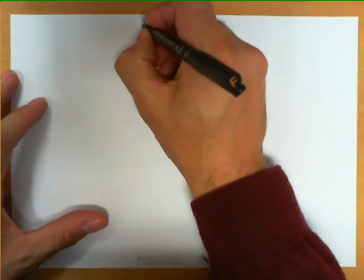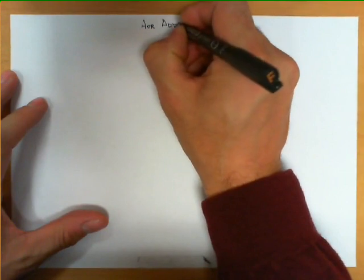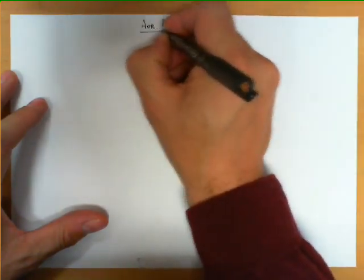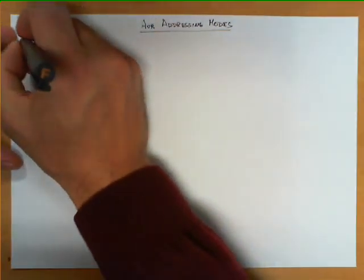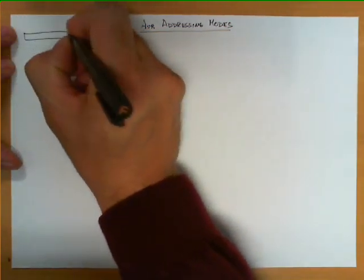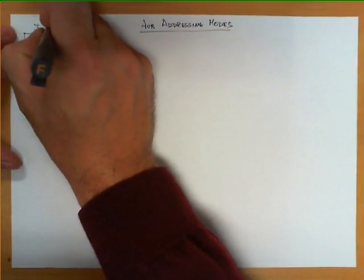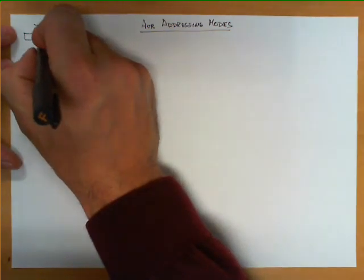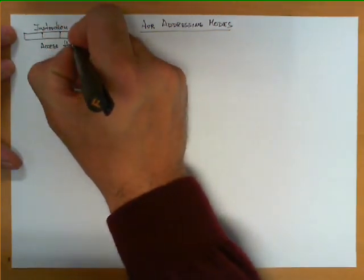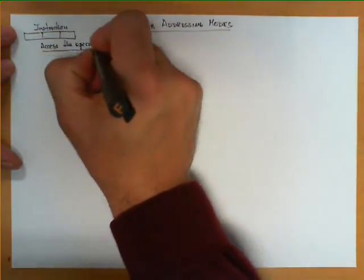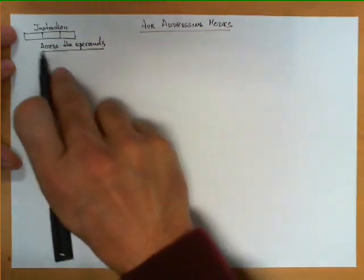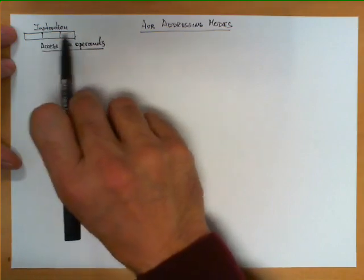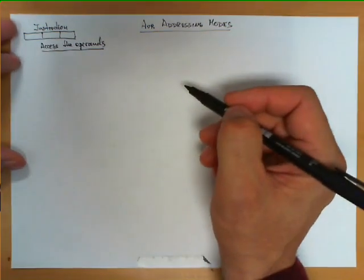In this video we're going to discuss three of the AVR addressing modes, the simplest ones. An addressing mode is the mechanism that the microprocessor has by which certain fields from the instruction are interpreted in order to access the operands. It's something that occurs inside the execution of an instruction, and this functionality is what the microprocessor uses to access the operands.